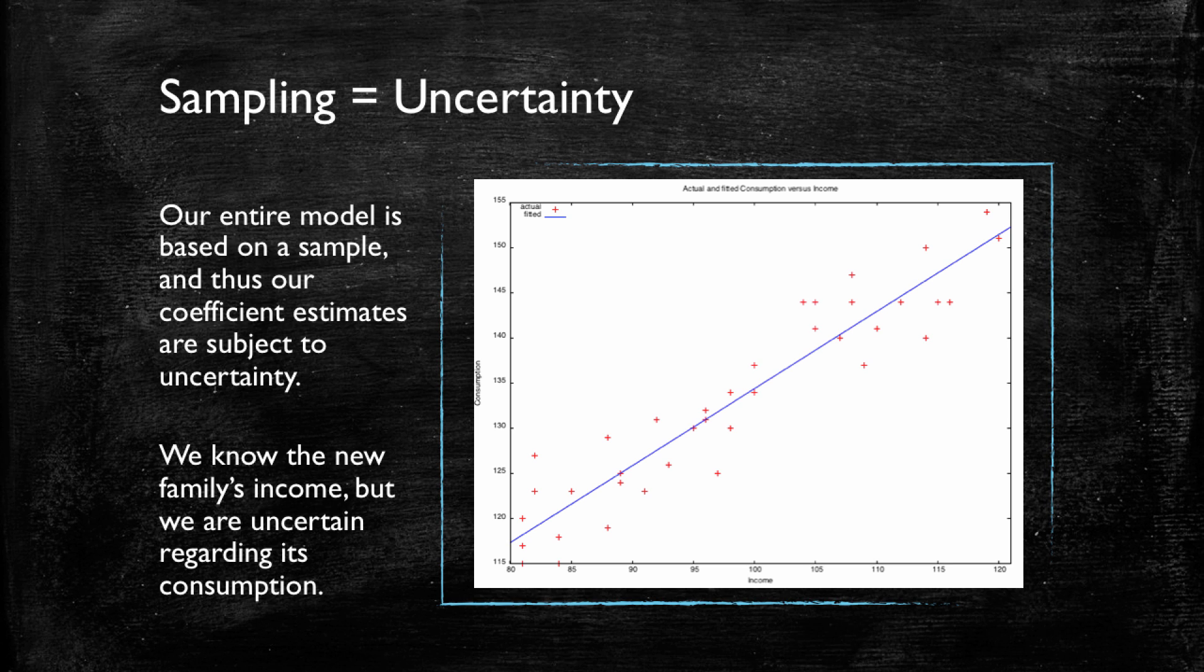So even though we know a family's income, we have certain uncertainty regarding its true consumption. What we know here is that the income is 100, but we really don't know which of all these possible lines here could be the correct one. We know that all of these could be because they are more or less close to where the 100 value intersects our estimate, but we're not really sure which of these could be the real value. What could we do about this?